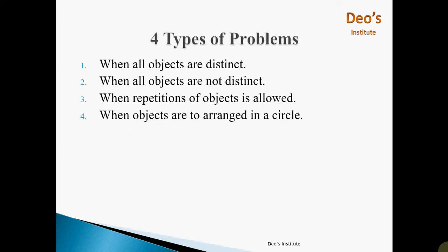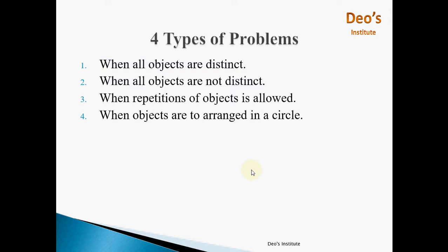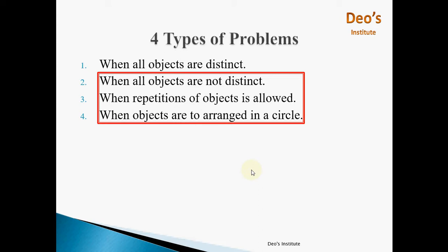There are basically four types of problems. The first one is when all objects are distinct, which we covered in the previous video. In this video we will focus on the remaining three types: when all objects are not distinct, when repetition of object is allowed, and when objects are to be arranged in a circle.